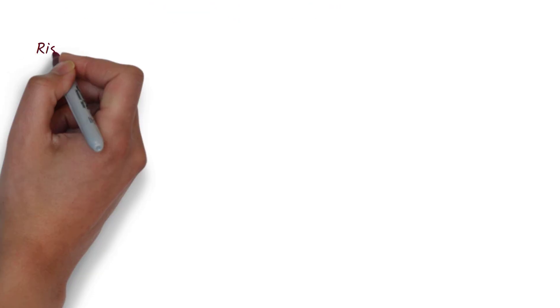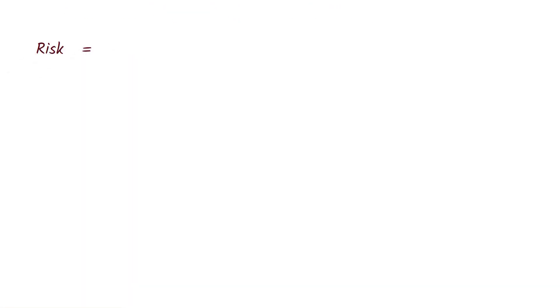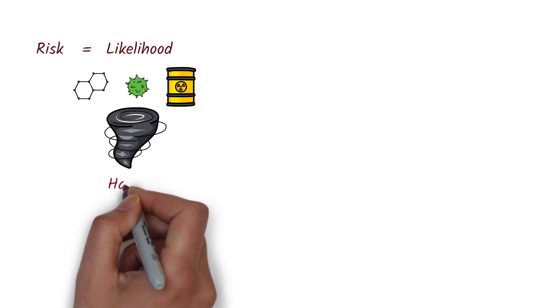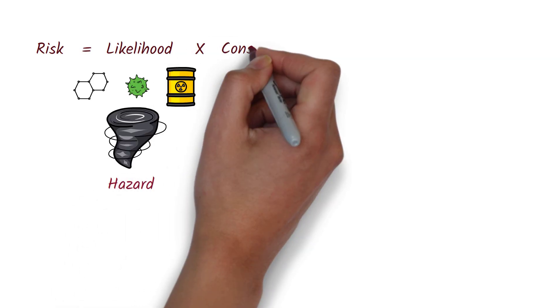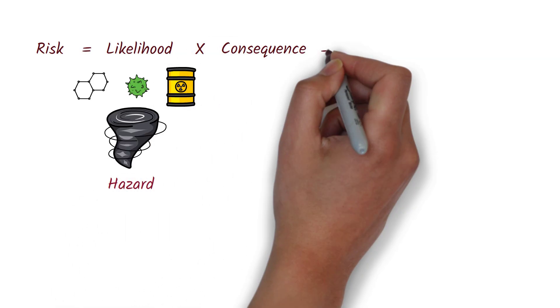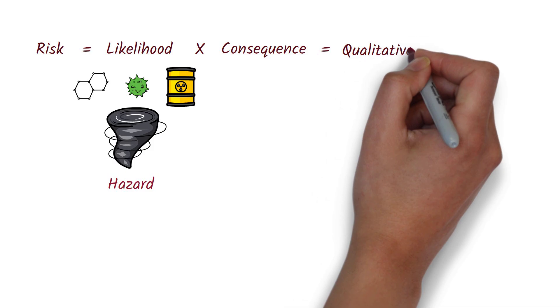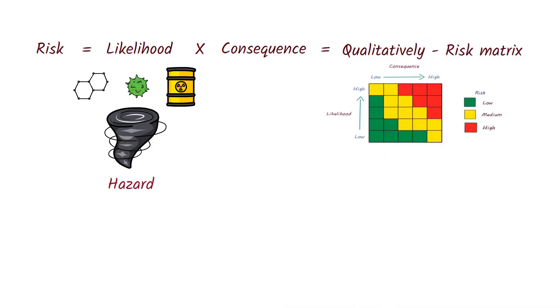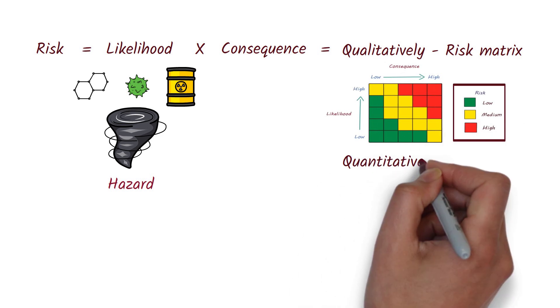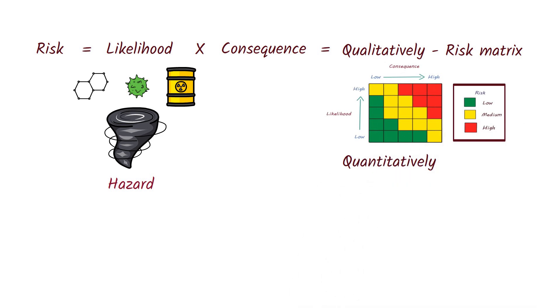What is risk? Risk is a measure of the likelihood of being exposed to a hazard and the consequence if exposure occurs. It can be measured qualitatively — for example, using a risk matrix into categories like low, medium, or high — or quantitatively, using statistical or mathematical modeling, or a mix of both.